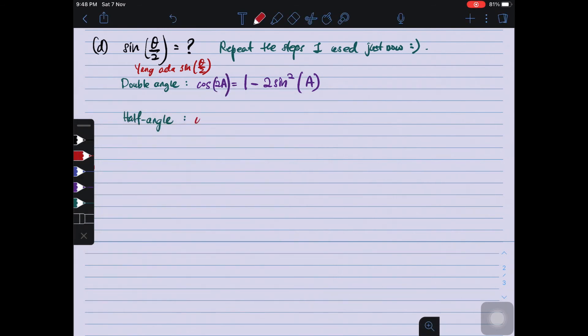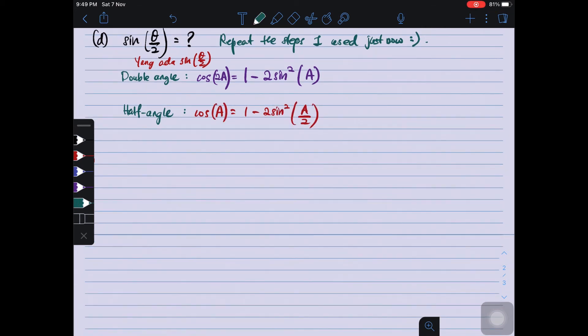So, double angle formula is cos 2A. So, we need to choose. Since cos 2A has many formulas, we choose the one having sine. So we choose, iaitu 1 minus 2 sin² A. Alright. So half angle will become cos A equals to 1 minus 2 sin² A/2. Just make sure you choose the ones having sine. Sebab cos 2A has 3 formulas. So you must memorize this. It will be much easier if you do so.